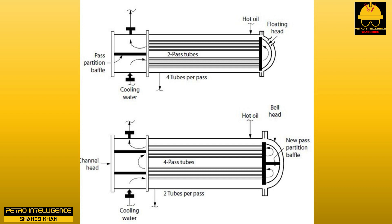The restricted water flow increased the water outlet temperature, the increased water temperature further reduced the water flow — a runaway cycle. They changed back to the two-pass configuration.